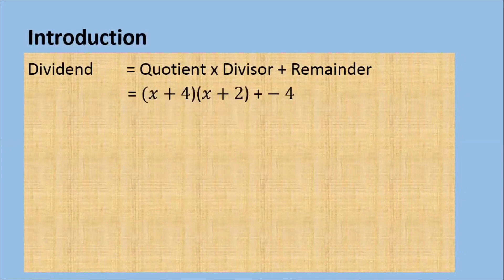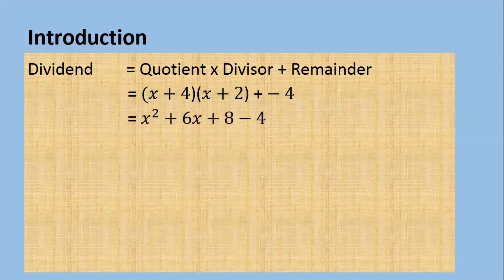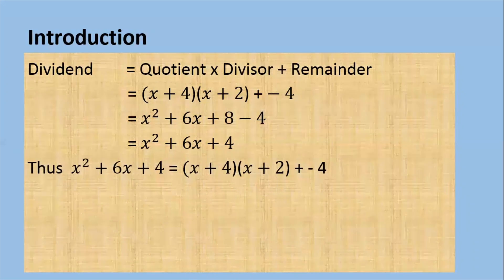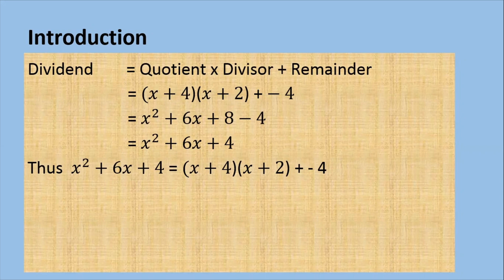So that will be x plus 4 multiplied by x plus 2 plus negative 4. When you remove the brackets, you will get x squared plus 6x plus 8 minus 4, that is x squared plus 6x plus 4. This is indeed the dividend. Therefore, x squared plus 6x plus 4 is simply a function of x, so we can call it f of x.